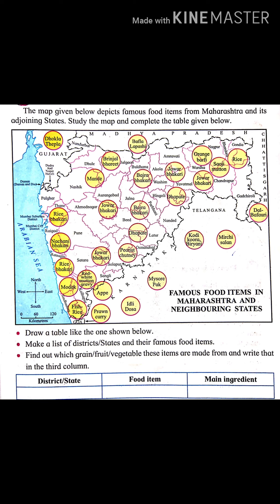We have seen a diversity in food items. Food items vary according to the region. The availability of grains, fruits, and vegetables depends on the season.